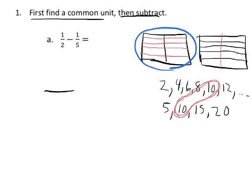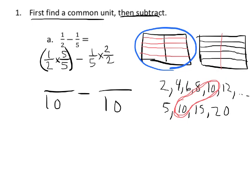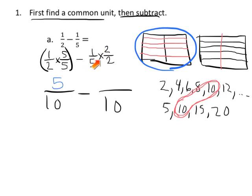So in order to get common units of 10, to turn a half into tenths, we have to multiply both the numerator and the denominator by 5, and to turn the fifth into tenths, we need to multiply both the numerator and the denominator by 2. So 1 half times 5 over 5 gives us 5 tenths, that's because 1 times 5 is 5, 2 times 5 is 10. In a similar fashion, we've got 1 times 2 and 5 times 2, so 1 times 2 is 2. And now we can subtract, because we have common units, so 5 tenths minus 2 tenths is equal to 3 tenths.